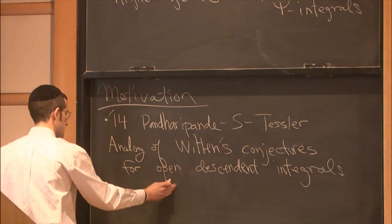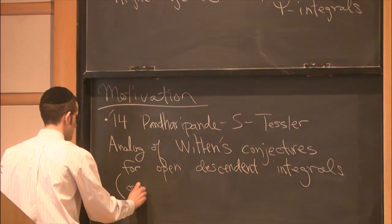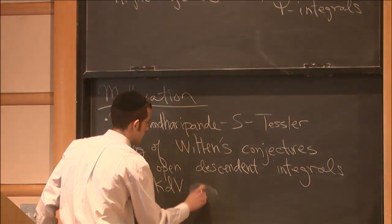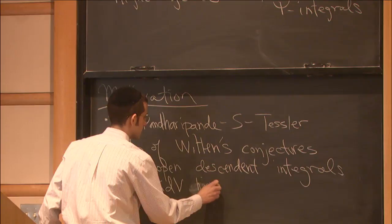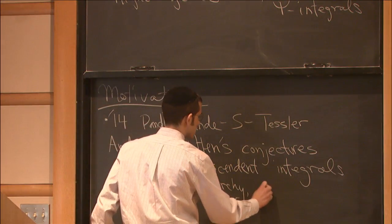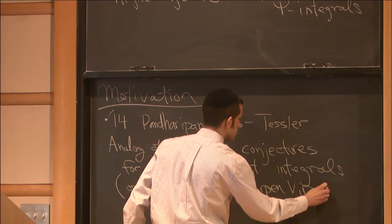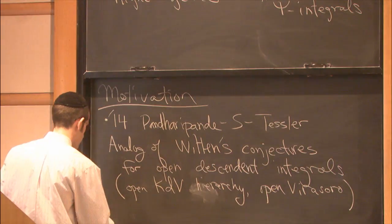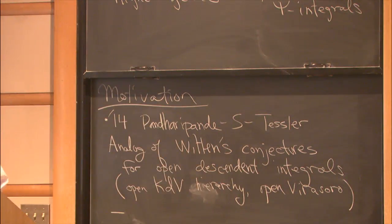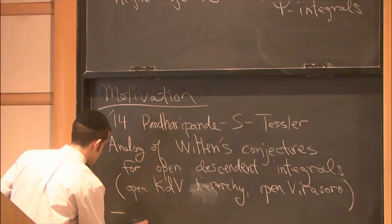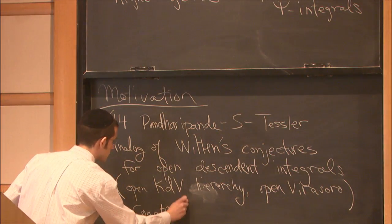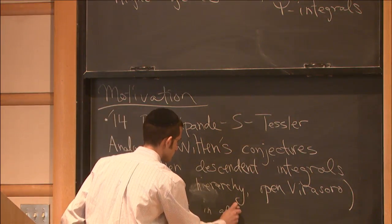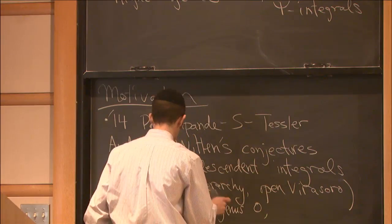For people familiar with that theory, there's the open KDV equation, similar to the KDV hierarchy, and there's an open Virasoro version of the same conjecture. This is a kind of conjecture, and there's a rigorous construction in genus 0 and a proof of the conjecture in genus 0.